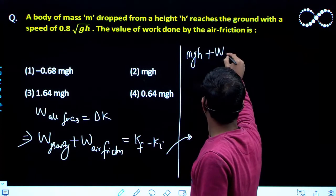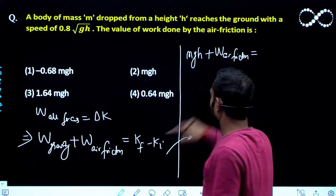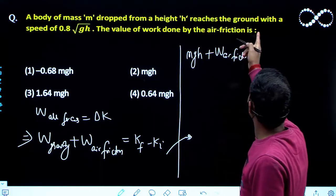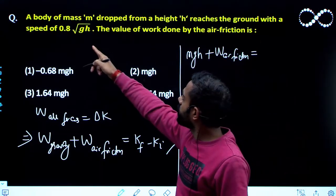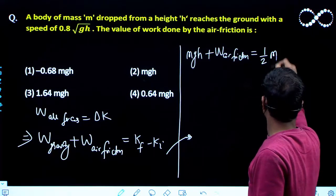Now work done by air friction. So this work done by air friction equals K final. So it is saying finally it is reaching with the speed given. So final speed is given here.